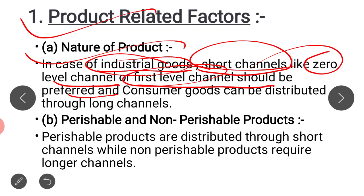If you have consumer goods like LCD, refrigerator, or AC, these can be distributed through long channels such as a three-level or two-level channel. Because these products are less expensive, not so technical, and they are frequently purchased, we can use long channels of distribution.